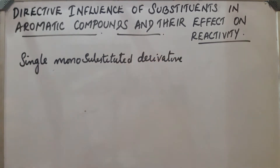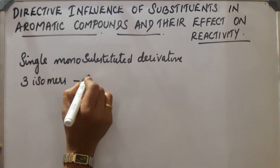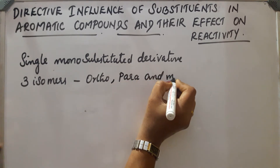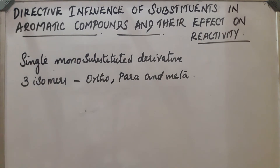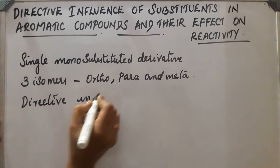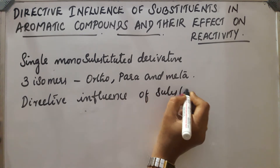If we convert this mono-substituted derivative into a disubstituted derivative, there are three isomers possible. They are ortho, para, and meta. So while converting a mono-substituted to a disubstituted compound, we can see that the substituent already present in the ring determines the position of the next incoming group. This ability is called the directive influence of substituents in the aromatic ring.